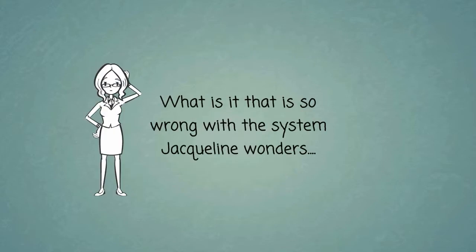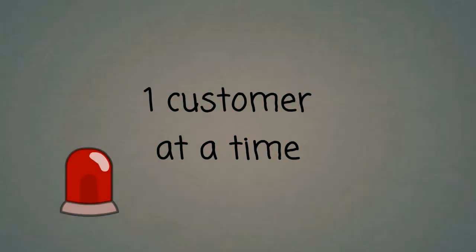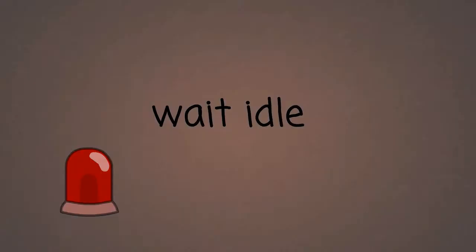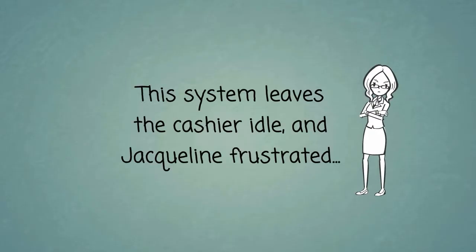What is it that is so wrong about the system, Jacqueline wonders? The main problem is that the cashier can only handle one customer at a time. And before he begins to serve the next customer, the cashier has to wait until all products are packed and carried away by the previous customer. This system leaves the cashier idle and Jacqueline frustrated.